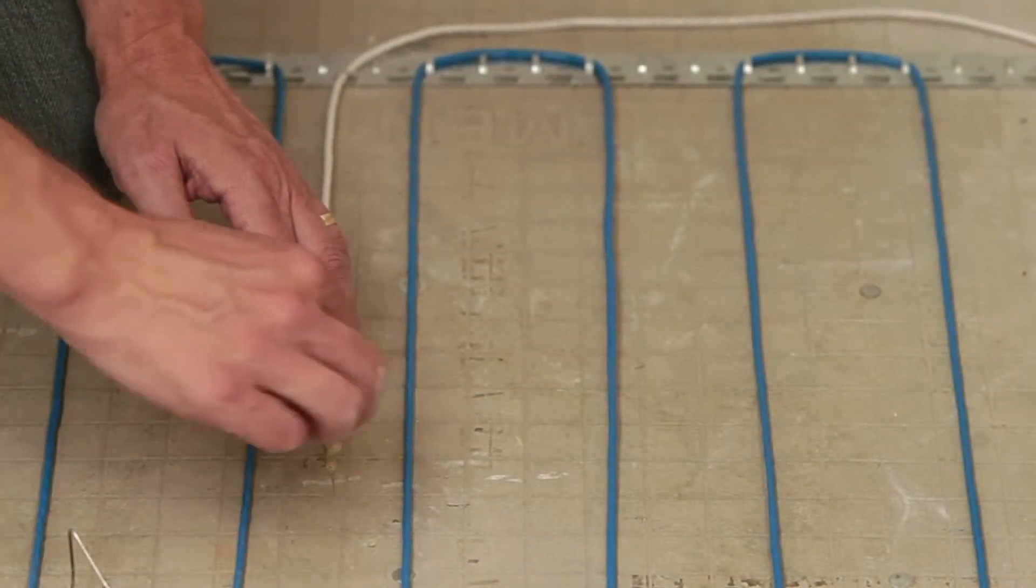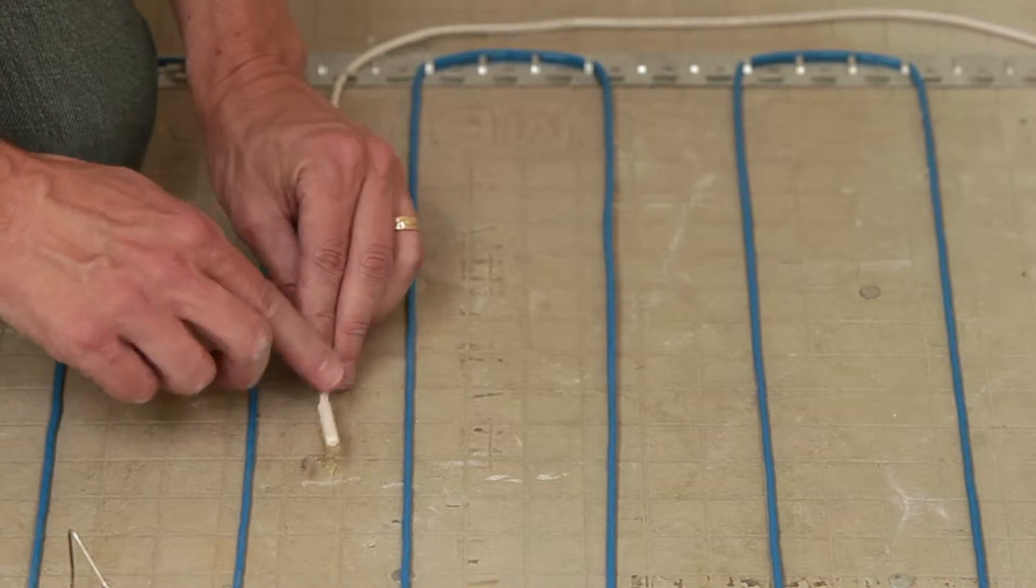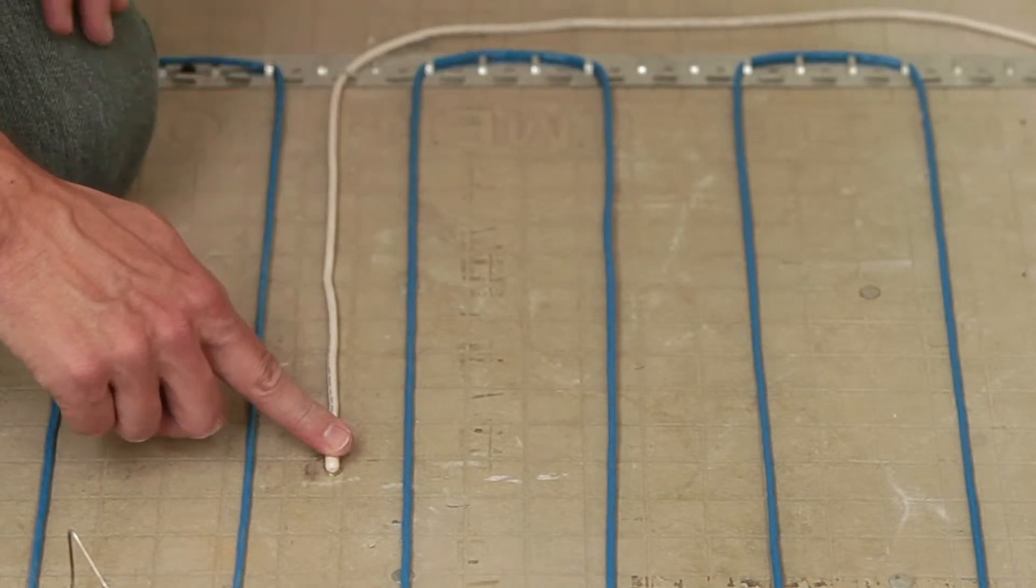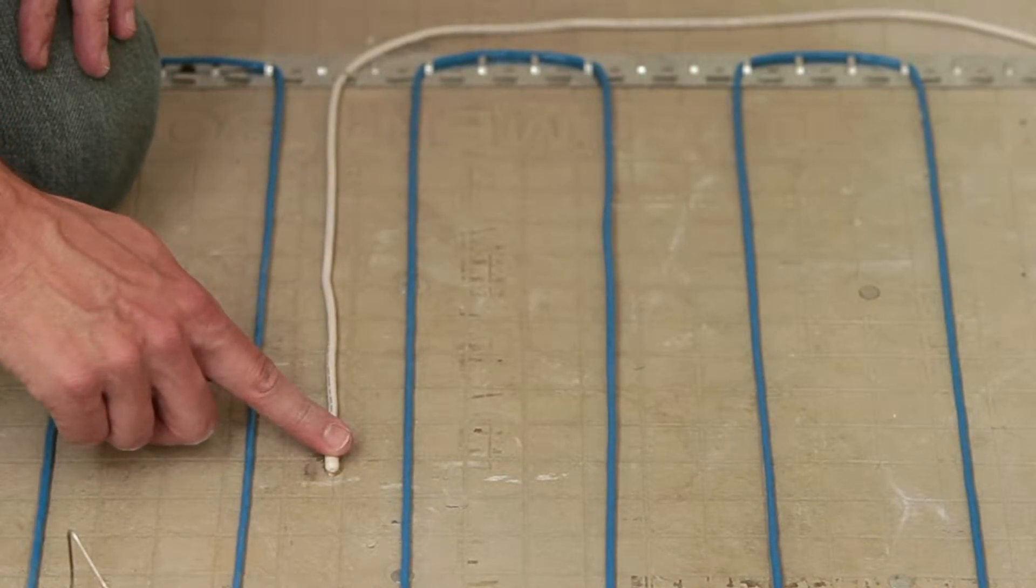The floor sensor that comes with the SunStat should already have been installed in the floor with the wire extending into the electrical box. If not, install it now before proceeding. Refer to the SunTouch installation video for details and contact the factory if you have questions.